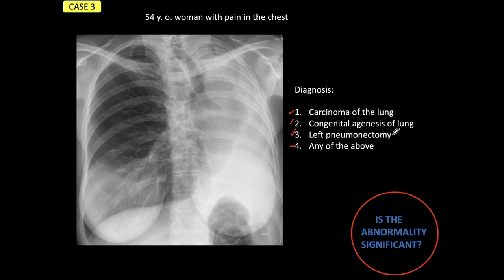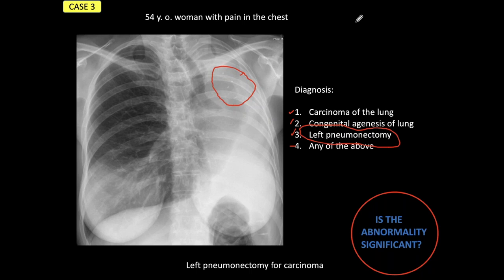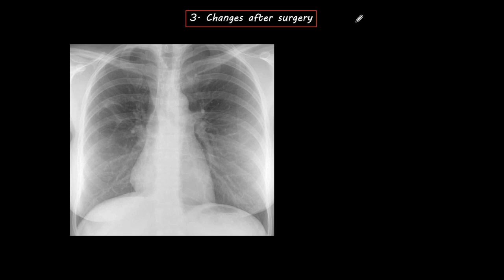Back to the presentation. What we see is the hallmark appearance common to carcinoma, congenital agenesis of the lung, and left pneumonectomy — all of them look the same. But there is a difference here: we see metallic sutures. When we see metallic sutures, we can be sure the patient has been operated on. So our correct diagnosis should be left pneumonectomy. And when we look at the clinical history, the patient was indeed operated on for carcinoma of the lung. I'm showing this case to emphasize the importance of metallic sutures in the chest — this is the third chapter: changes after surgery.